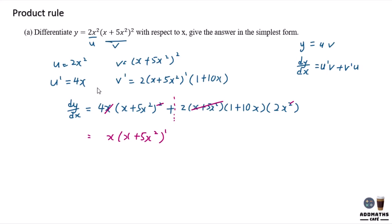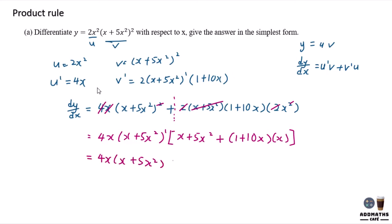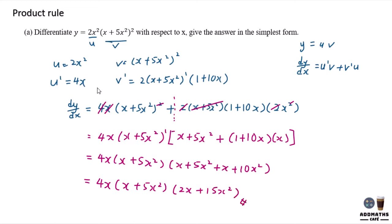2 times 2 will give me 4. So you can take 4 out as well. Copy the whole equation which is left over: (x plus 5x squared) plus (1 plus 10x) times x. So in this answer I will have 4x times (x plus 5x squared), expanding to x plus 5x squared plus x plus 10x squared. Simplifying, I will have 2x plus 15x squared. And this will be my final answer.